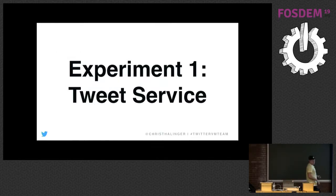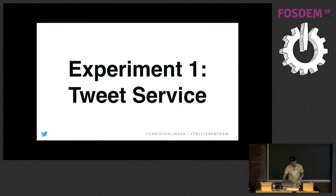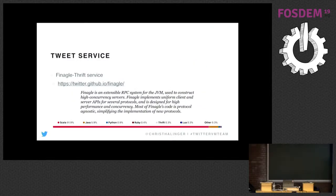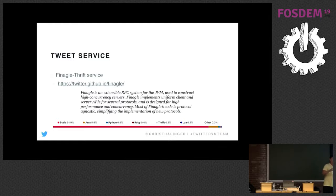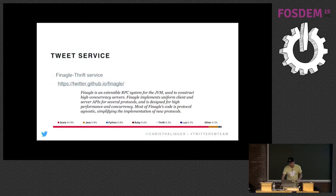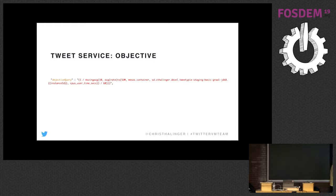The first experiment is the Tweet service — it's basically reading and writing tweets. It's built on Finagle, an open-source RPC framework we developed, available on GitHub. It's an extensible RPC system for the JVM used to construct high-concurrency services. The most important part is it's 92% written in Scala, and Graal handles Scala very well because Scala allocates a lot of temporary objects, and Graal's inlining and escape analysis are better than C2's.